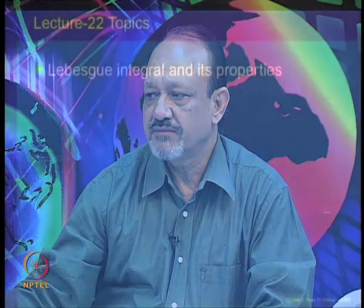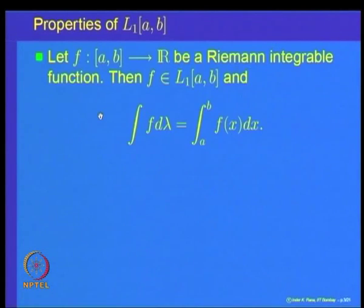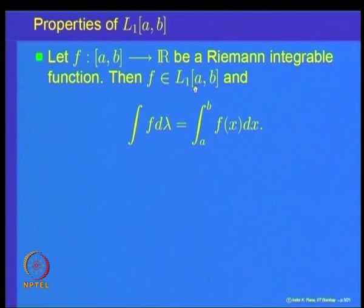We will continue the proof of that theorem and then go on to analyze some more properties of the space of Lebesgue integrable functions on the interval [a,b]. Today's lecture is mainly concerned with the Lebesgue integral and its properties. The theorem we want to prove is: if f is a function defined on [a,b] to ℝ and it is Riemann integrable, then it is also Lebesgue integrable and the Riemann integral equals its Lebesgue integral.